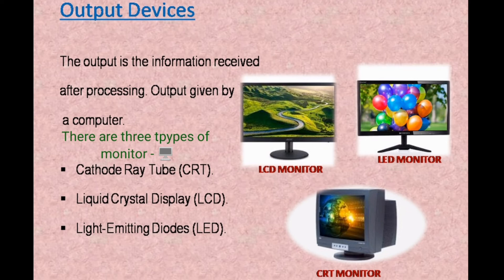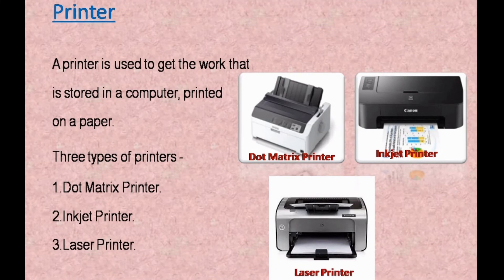The next output device is the printer. A printer is used to get the work stored in a computer printed on paper. There are three types of printers: dot matrix printer, inkjet printer, and laser printer. Nowadays we mostly use laser printers. The document printed on paper is called a hard copy.